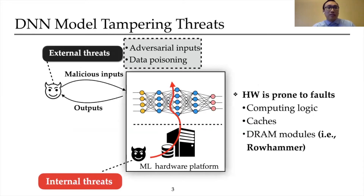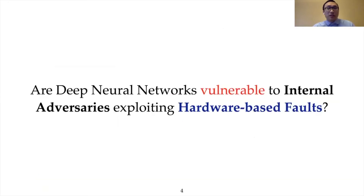Recent developments of hardware-based attacks revealed that various hardware structures such as computing logic, caches, and DRAMs can be prone to faults. Such hardware vulnerabilities pose unprecedented threats to the integrity of software running in systems. As internal adversaries can directly perturb DNN systems, extending their security impact on DNN model integrity is necessary. In this paper, we aim to answer: are deep neural networks vulnerable to internal adversaries exploiting hardware-based faults? We demonstrate a new class of attack that manages to tamper DNN model integrity by exploiting hardware-based vulnerabilities.